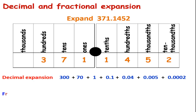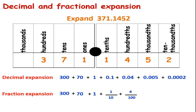Now let's look at the fraction expansion of 371.1452. The number has three hundreds, so we write 300. Plus seven tens, so we write 70. Plus one one, so we write 1. Plus one tenth, written as 1 upon 10. Plus four hundredths, written as 4 upon 100. Plus five thousandths, written as 5 upon 1000. And two ten-thousandths, written as plus 2 upon 10000.